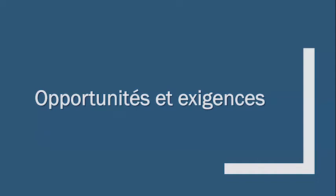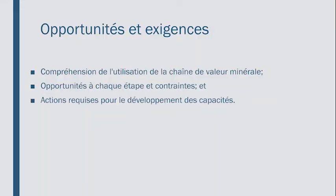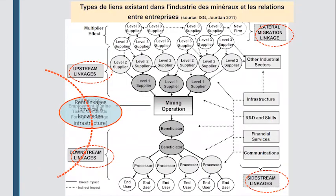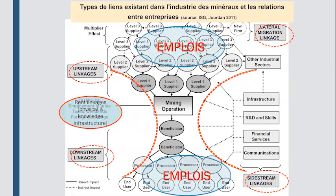What are the opportunities, in detail, that exist? On the entire mineral value chain, there are opportunities at each stage. But there are also constraints, of course, and for these constraints there are actions required to be able to take profit. Here are the types of links that exist in the mining industry and the relations between companies. First of all, employment — at all levels, employment exists. Employment can increase or decrease depending on the stage in which we are located. In the beginning, there is high demand in terms of employment.